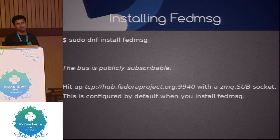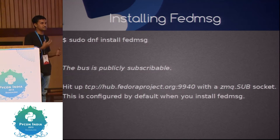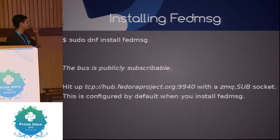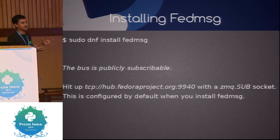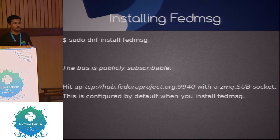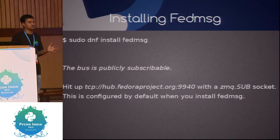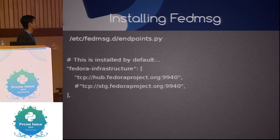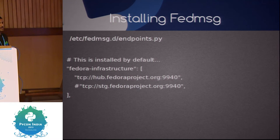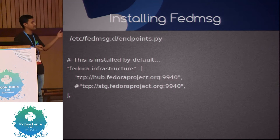I'll show a list of examples of applications built on top of this bus. Anyone who wants to start contributing to Fedora can use these messages to create meaningful projects. If you hit tcp://hub.fedoraproject.org:9940, that's the public subscribable port. With a ZMQ sub socket you'll be able to get all the messages. We also have commands inside the FedMessage package so you can consume messages directly without writing the complete ZeroMQ code. This is the structure of the config file — a dictionary with endpoints mapped.